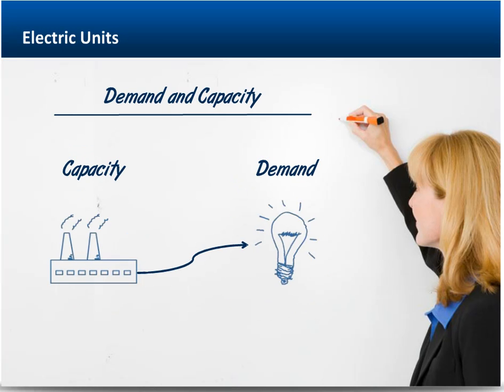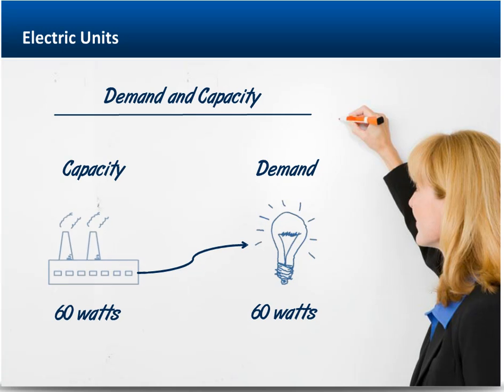As an example, consider a 60-watt light bulb in a lamp. When you turn on the lamp, the bulb creates a demand of 60 watts. And in order for the bulb to light, 60 watts of capacity must be available at the generator and along the entire path between the bulb and the generation source.